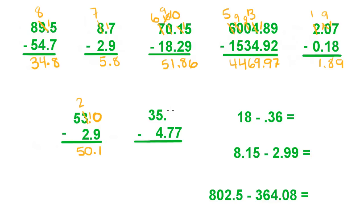Over here we're going to put in two 0 placeholder holders. 0 minus 7 — we have to come all the way to the 5. Make it a 4, make that a 10, cross it out, make it a 9, and make that a 10. 10 minus 7 is 3. 9 minus 7 is 2. Bring down the decimal point. 4 minus 4 is 0. And bring down a 3.